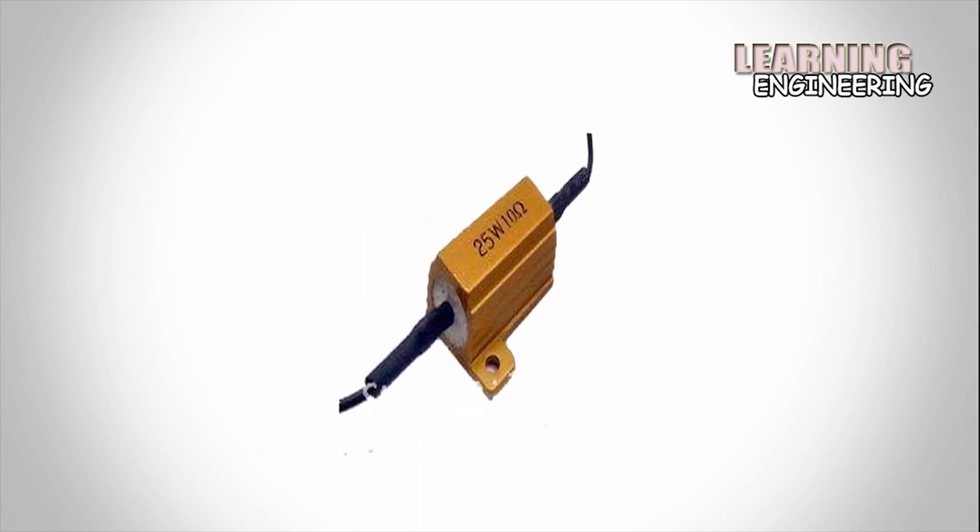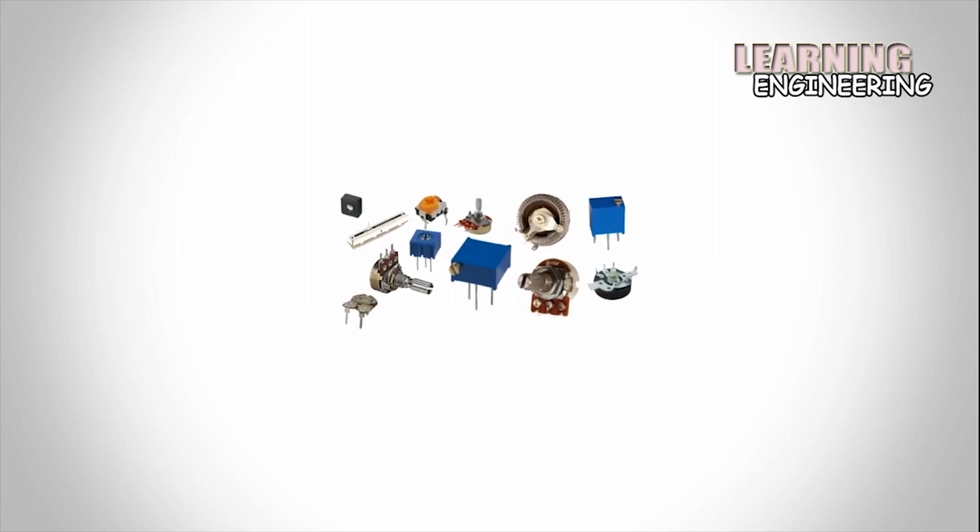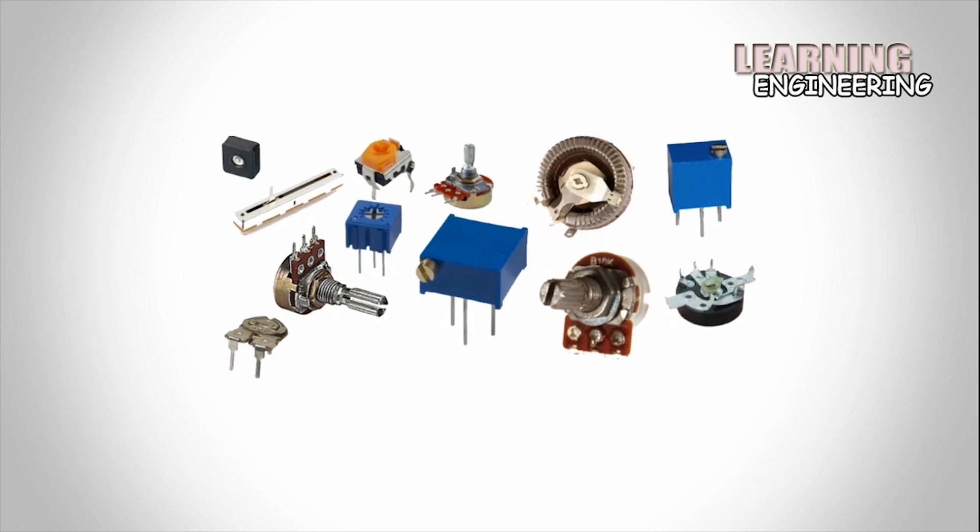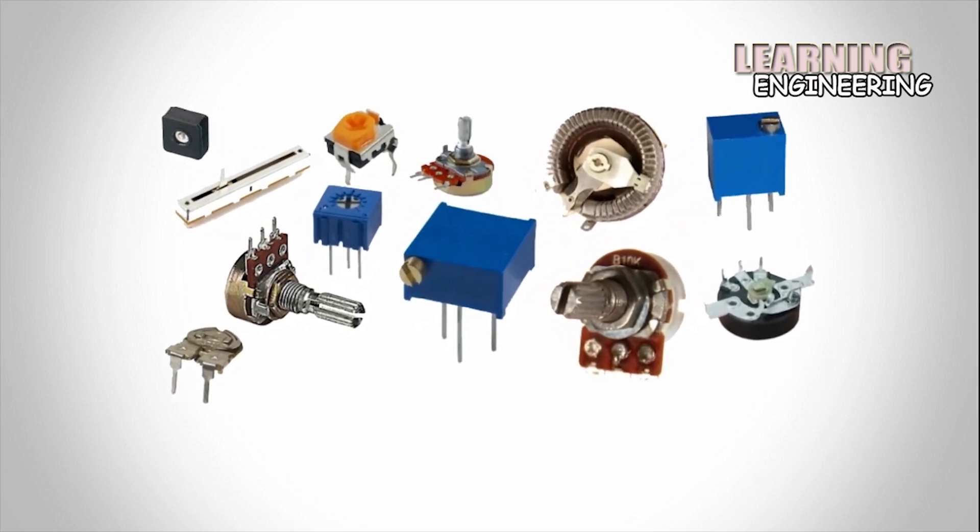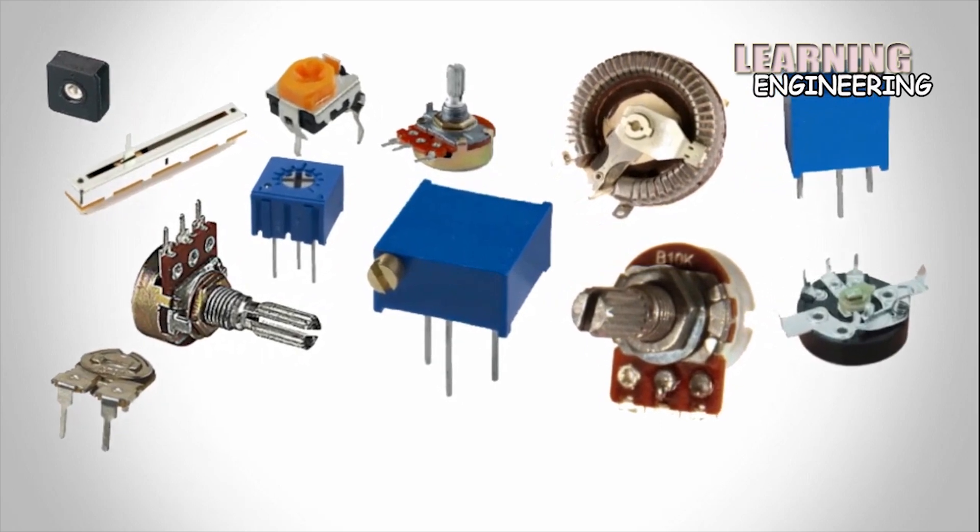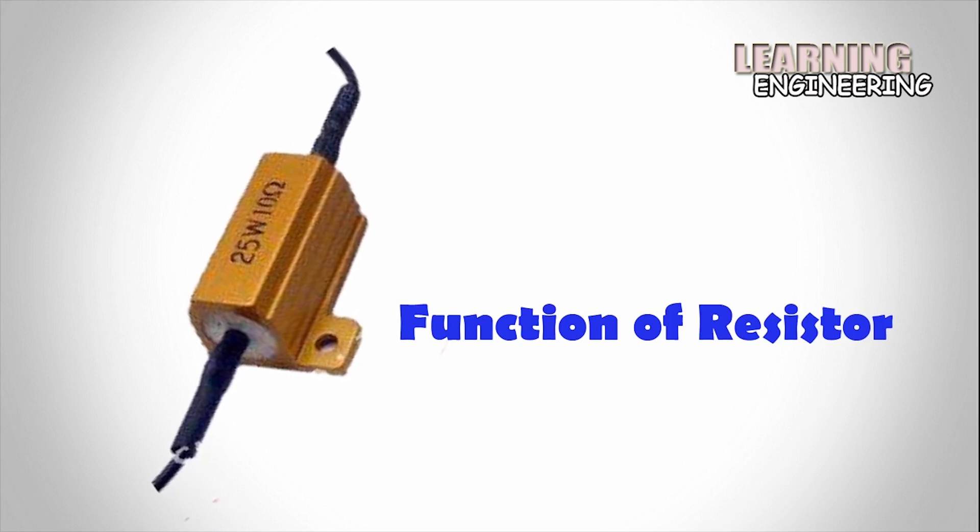Variable resistors can be used to adjust circuit elements such as volume control or a lamp dimmer, or as sensing devices for heat, light, humidity, force, or chemical activity. This video will show you the function of resistor.